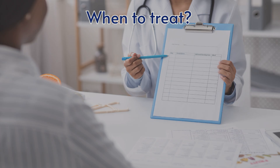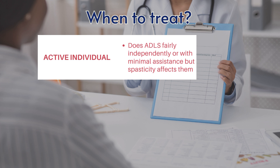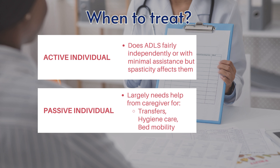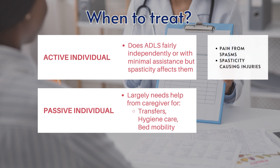Now we'll go through some examples of when to treat. Before treating, it's good to understand whether the client or patient is an active individual or a passive individual. For an active individual, they will usually be able to do ADLs fairly independently or with minimal assistance, and spasticity will be affecting their daily functional movements — things like pain from spasms, or spasticity that has the potential to cause injury, such as falls during walking due to spasticity in the ankles.